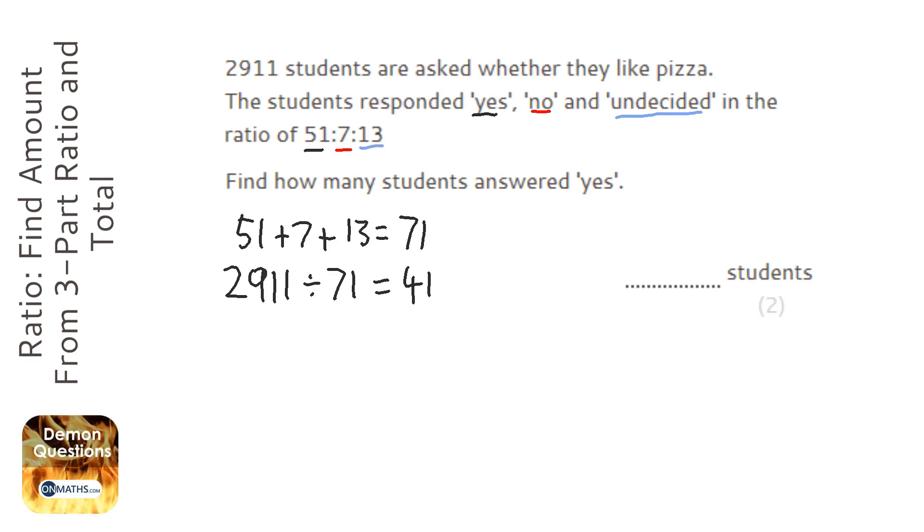So we're only interested in yes, so we're going to get that 51 and we're going to times it by how much each of those parts is worth which is 41. So I'm going to do 41 times 51 or 51 times 41 and we get the answer 2,091.